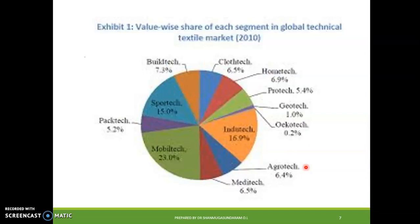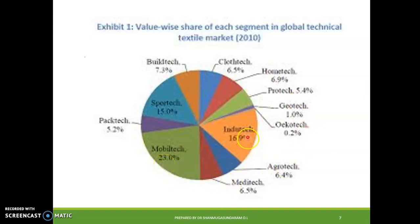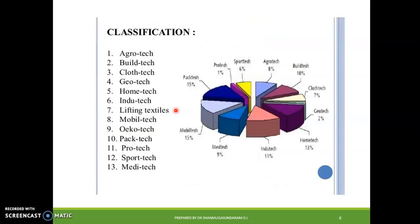Looking at the market scenario, build-tech occupies 7.3%, cloth-tech 6.5%, home textiles 6.9%, and sport-tech 5.4%. Mobile-tech occupies 23% and industrial tech almost 17%. While some areas are growing slowly, mobile technology, industrial tech, and sports tech are growing at a faster rate.